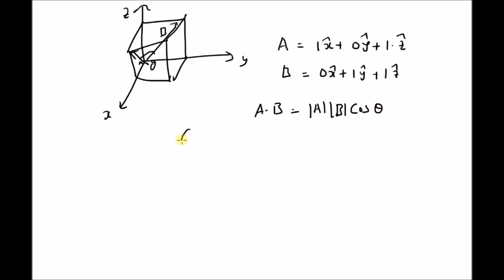So a dot b equals (1 times x hat plus 1 times z hat) dot (1 times y hat plus 1 times z hat).